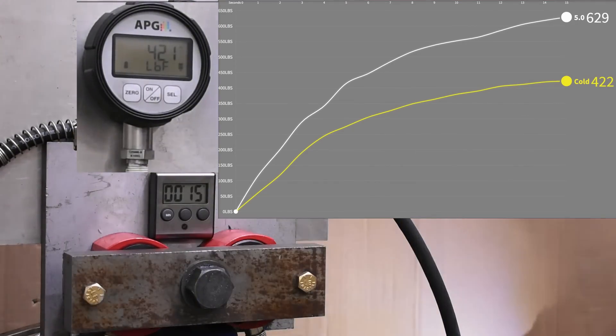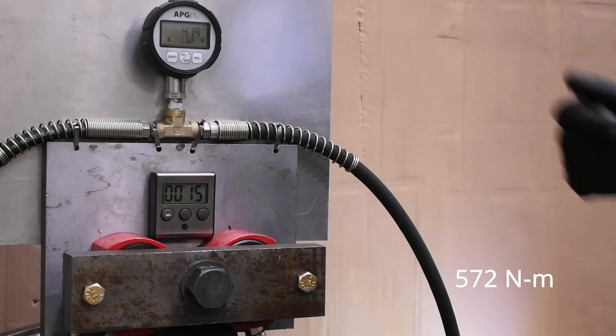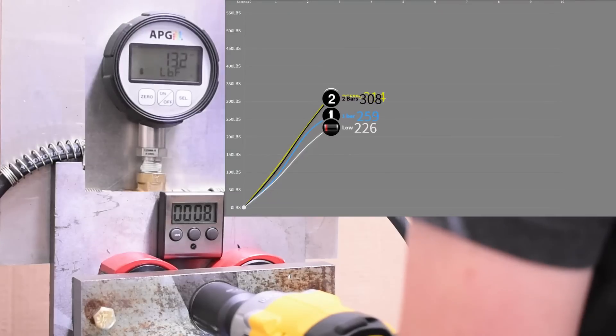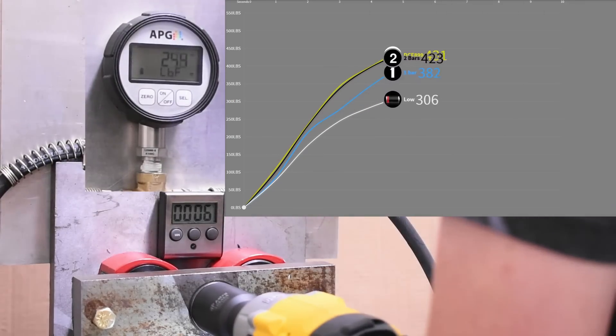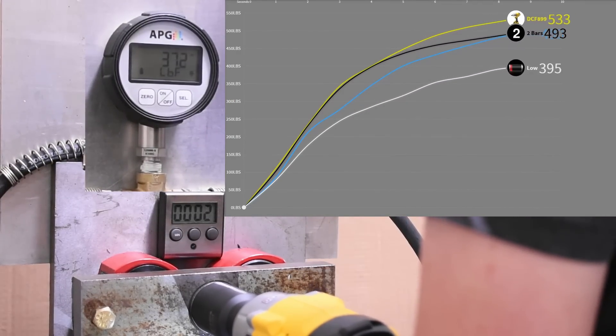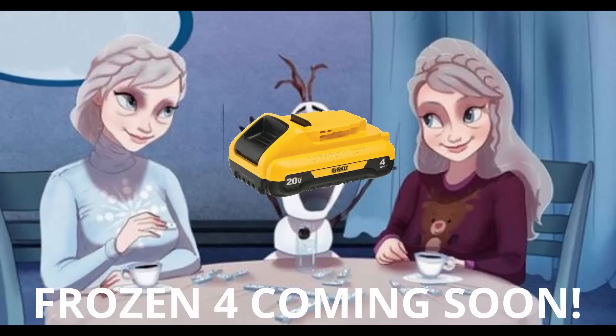422 down from 629, 33 percent one third less. Ouch, that's worse of a loss than we saw with a nearly dead like blinking one bar battery. Basically turns your high torque into a mid torque at best. Alright, time for the frozen 4 amp hour.